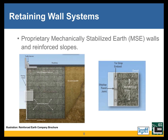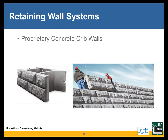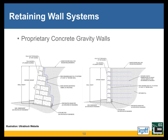An MSE wall has a facing, a zone of reinforced soil with horizontal reinforcing layers behind it, and conventional backfill behind that. Concrete crib walls rely on the mass of the concrete and the fill inside the voids of the units for stability. Concrete gravity block walls are similar but use solid concrete units stacked for stability, though sometimes they incorporate horizontal reinforcing layers similar to MSE, making them a hybrid system.